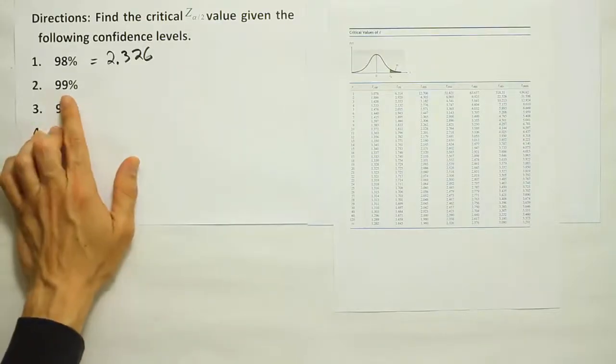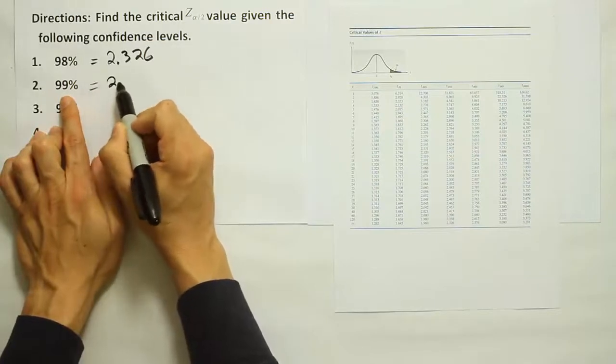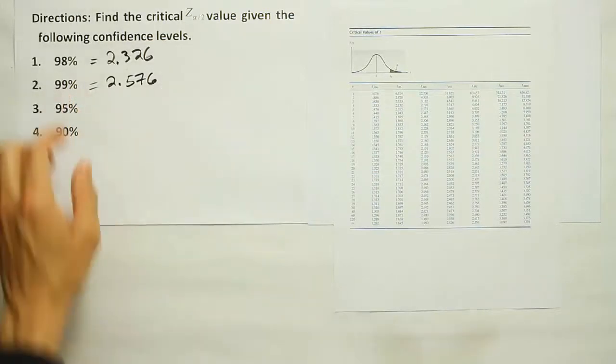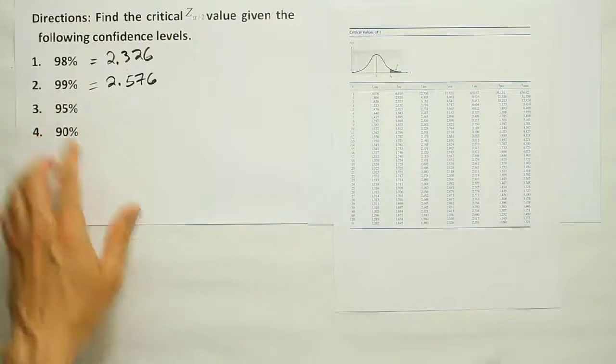Okay, so the answer we found for 99% confidence is 2.576. Now let's go do 95% confidence.